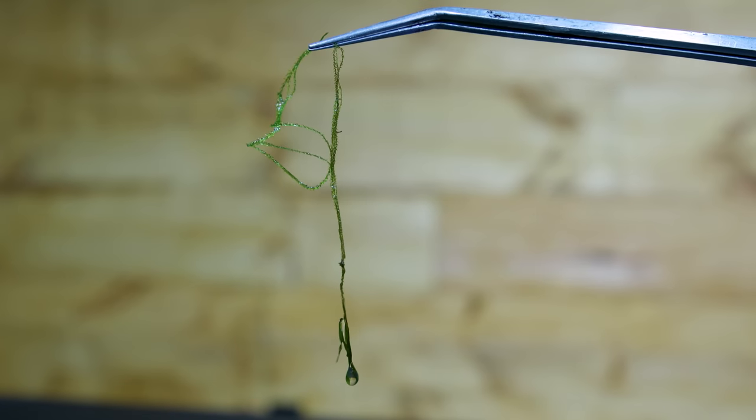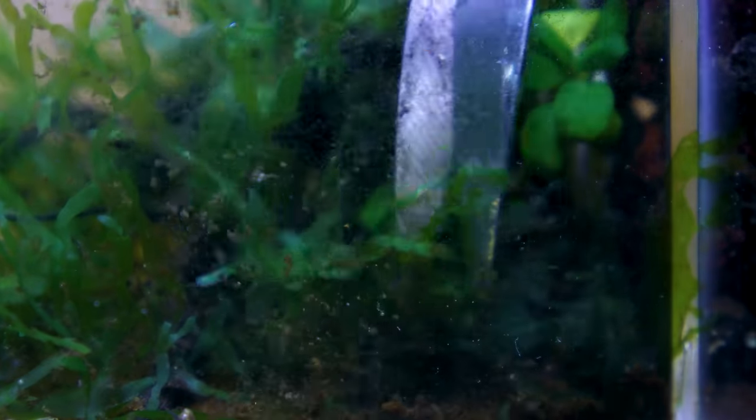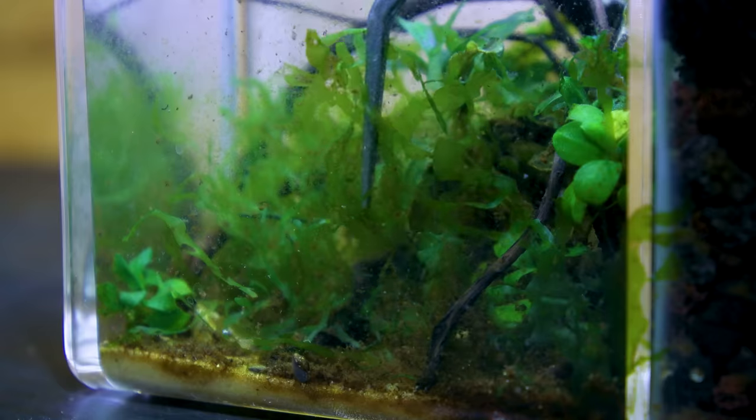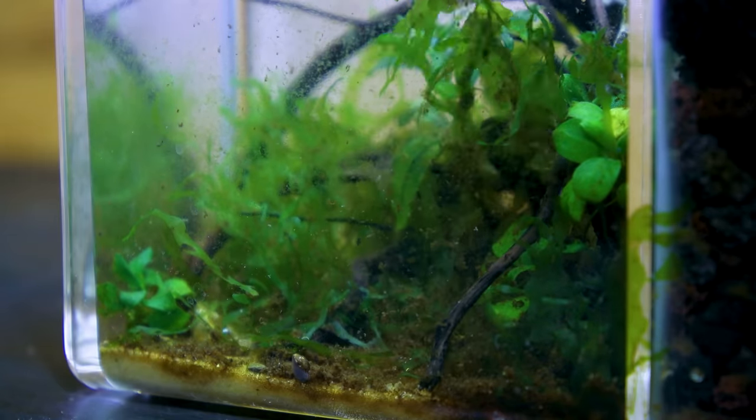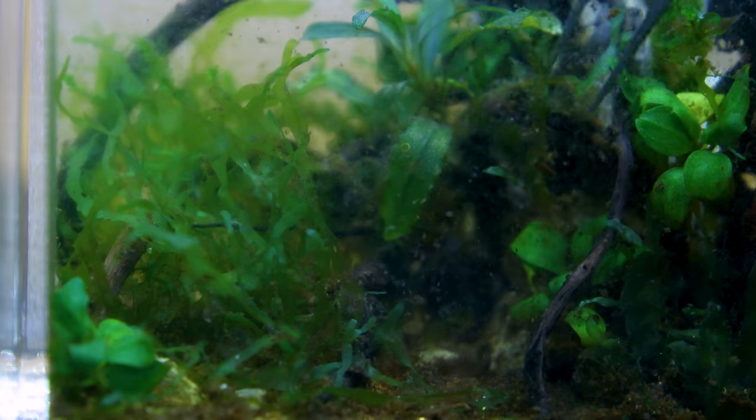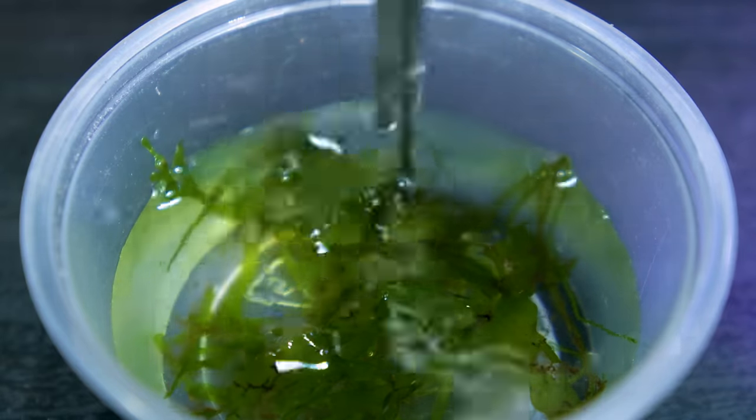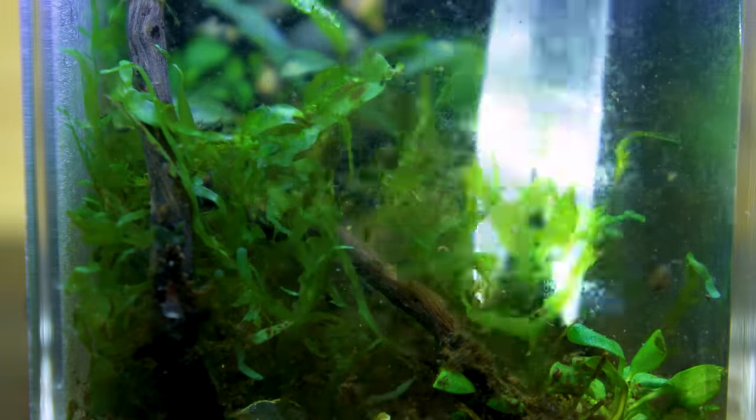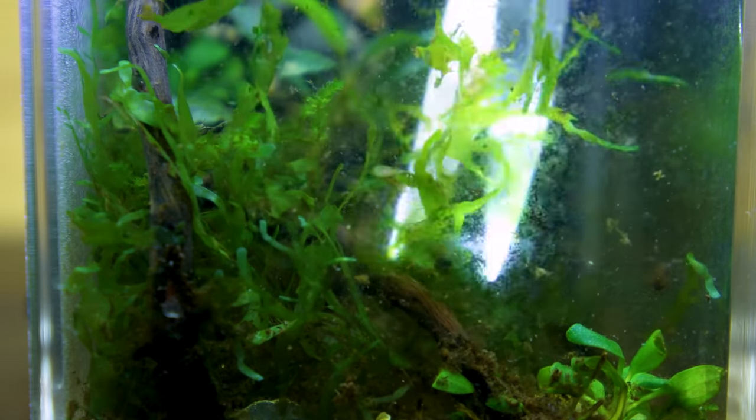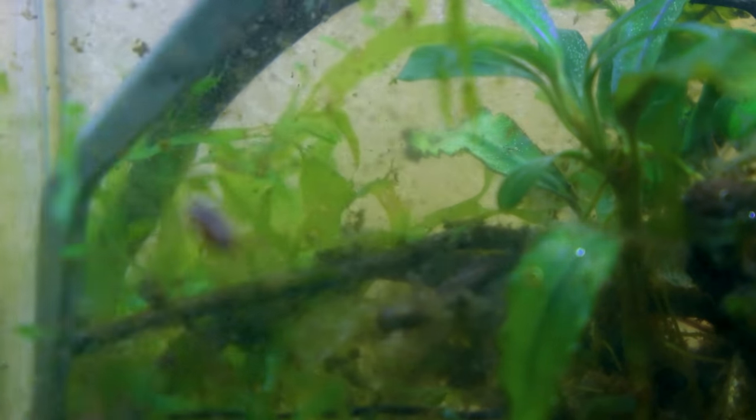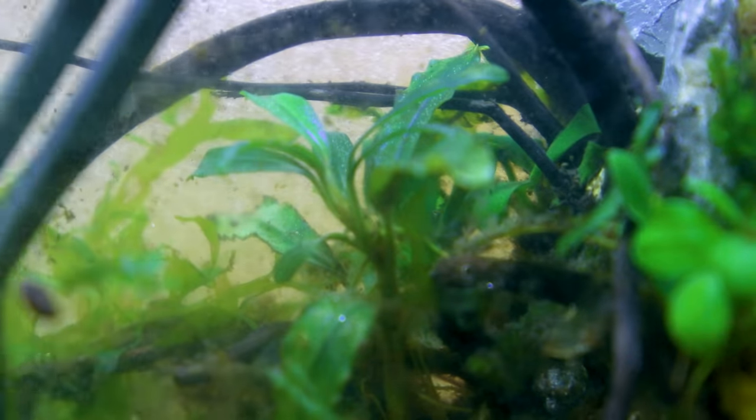The first thing I noticed was this pesky string of java moss. I didn't intentionally put it in here, but chances are it snuck in with the Susswassertang, which has also grown out of control. I trimmed up various sections and pulled it out with tweezers. The majority of this can be repurposed for other projects, so I'll save it for later. I have to be really careful as I'm doing all of this because one wrong move could ruin the entire arrangement.